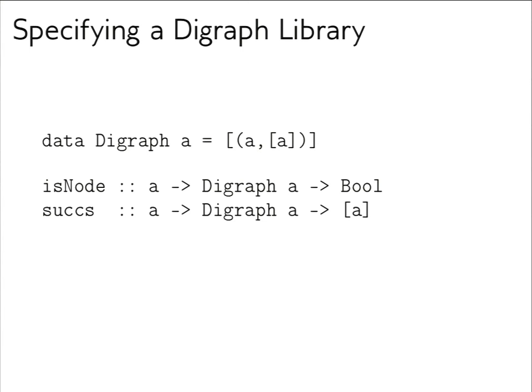For this example, we will trust that `isNode` and `successors` work — we've tested them. We will try to specify the function `isPath` using those two functions. `isPath` takes two node identifiers and a digraph and returns a boolean indicating whether there is a path between those two nodes. Note the difference between a path and an edge: an edge is a direct connection; a path may hop between different nodes.